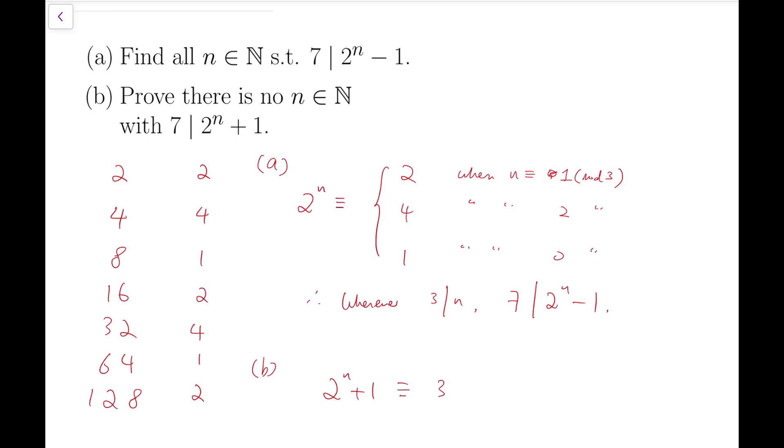can only be 3, 5, or 2. That means 7 can never divide 2^n + 1. So we have solved an IMO problem.